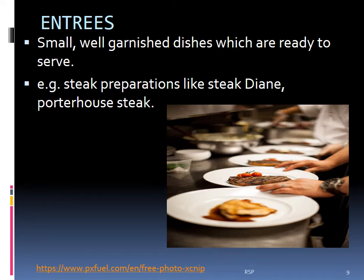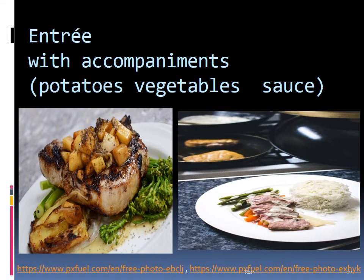The next course in the sequence is the entrée, or the first meat course. These are small meat preparations which are well garnished and ready to serve. Various steak preparations such as steak Diane and porterhouse steak are served in this course. An entrée is always accompanied with potatoes, tossed vegetables, and an appropriate sauce. Entrée is served on a main plate, and the cover is a joint knife and joint fork.